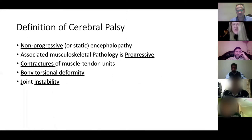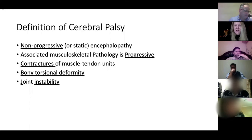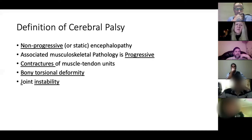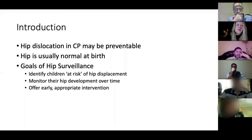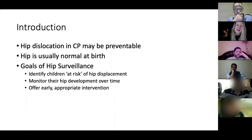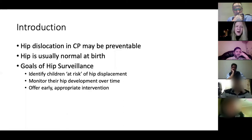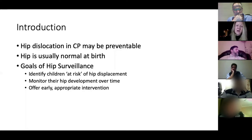The definition of cerebral palsy is that it's a non-progressive brain lesion, but the associated musculoskeletal pathology is progressive and typically results in spasticity and contractures of the muscle tendon units. You also get bony torsional deformity due to abnormal forces, which eventually gives rise to joint instability. The goals of a surveillance program are to identify children at risk of hip displacement, monitor their development over time, and offer early appropriate intervention.